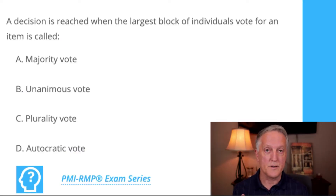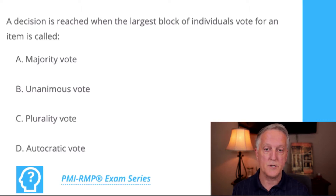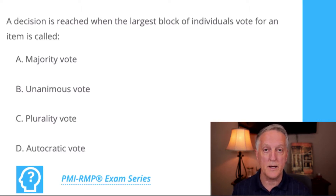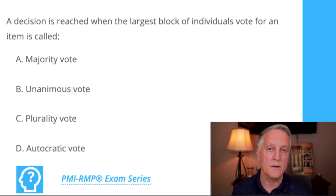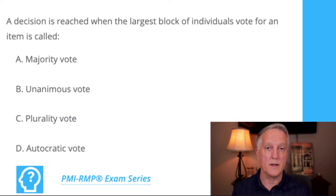I have a question to test your understanding. A decision is reached when the largest block of individuals vote for an item — is called: a) a majority vote, b) a unanimous vote, c) a plurality vote, or d) an autocratic vote?